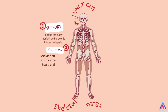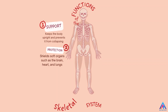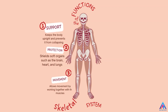Number two, it gives protection. The bones protect our vital organs like the skull protecting our brain, and the ribs and sternum protecting our heart and the lungs. Number three, it allows us to move because it works in coordination with the muscles and allows us to move.